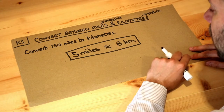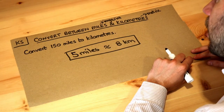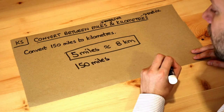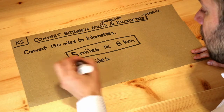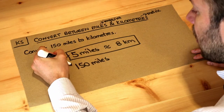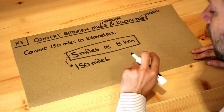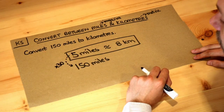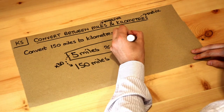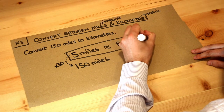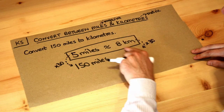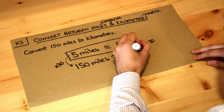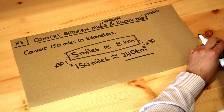A mile is longer than a kilometre. So we want to convert 150 miles. To go from 5 miles to 150 miles, how many times bigger is it? Well, if we do 150 divided by 5, we get 30. So we have 30 times as many miles, which means we have 30 times as many kilometres. So if we do 8 times 30, we get 240 kilometres. And that is the final answer.